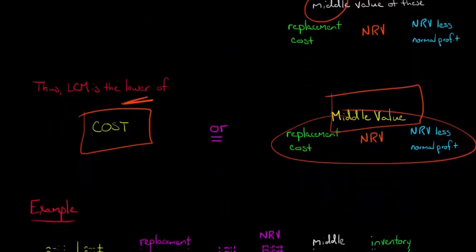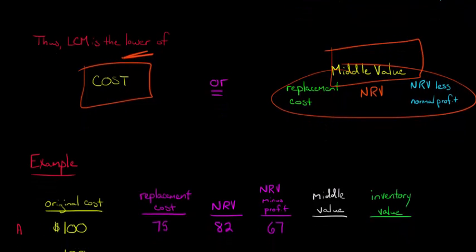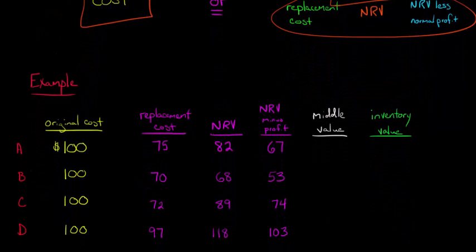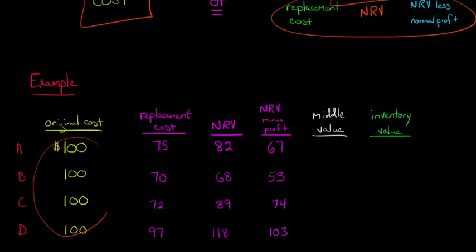So let's jump into some examples. We've got four situations here — let's call them situation A, B, C, and D. And in each case, the original cost of the inventory is going to be $100.